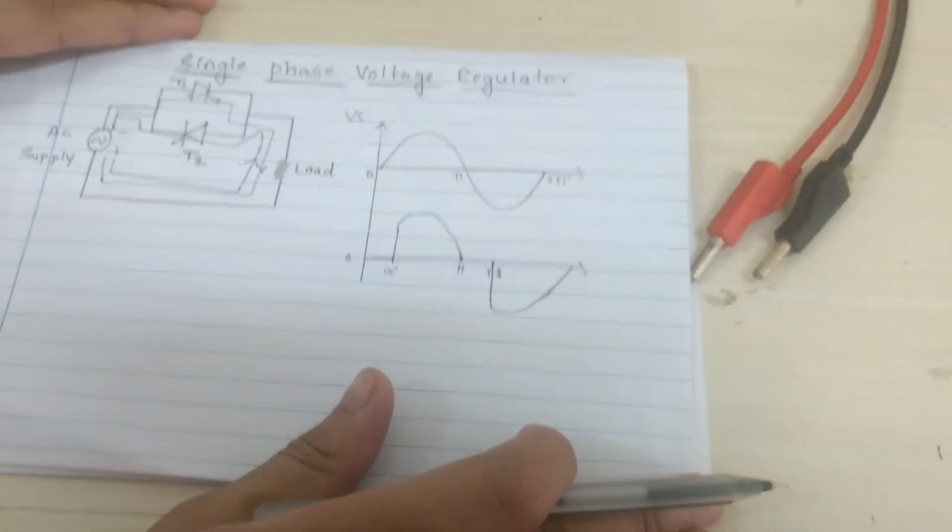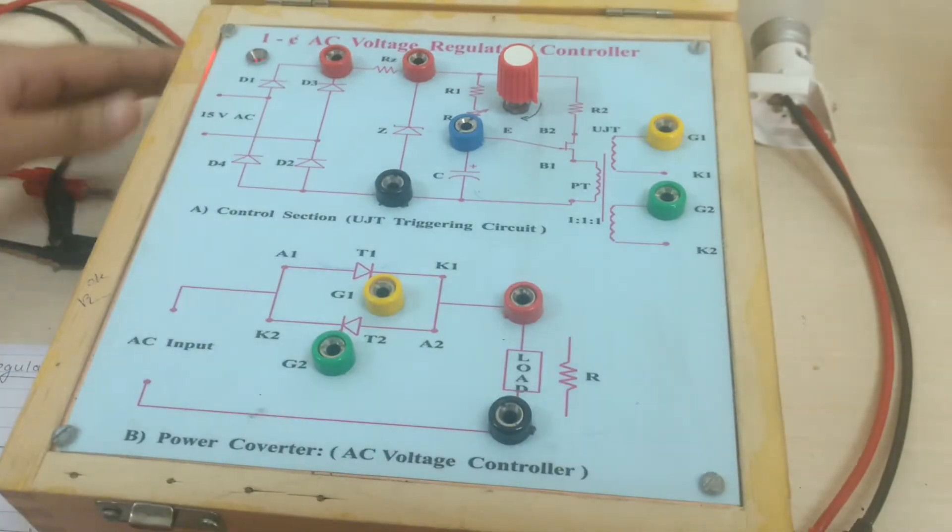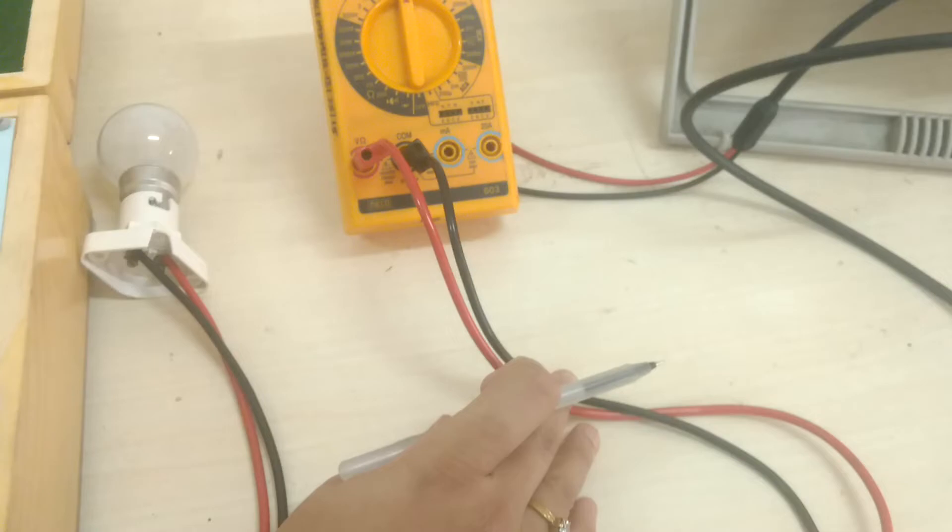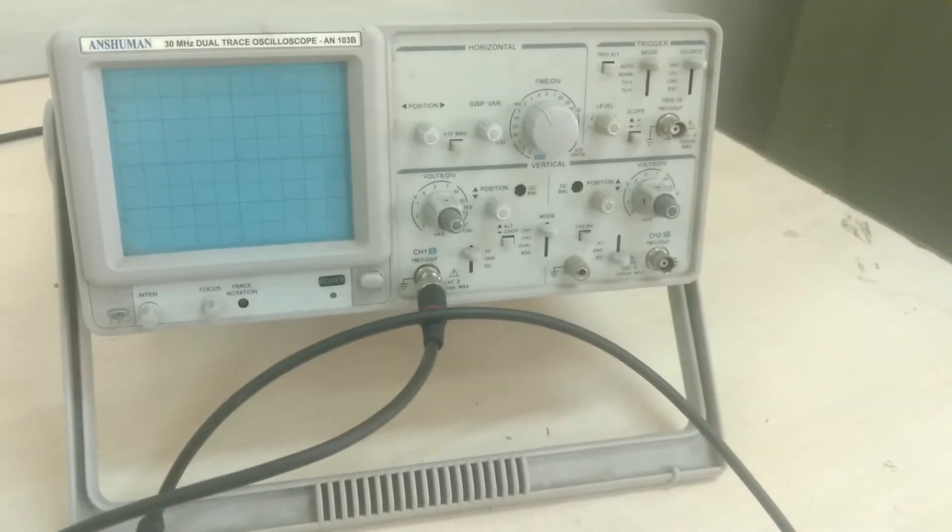The required apparatus for this experiment are: AC voltage regulator trainer kit and one resistor load, voltmeter to measure the output voltage, and CRO to observe the output waveforms.